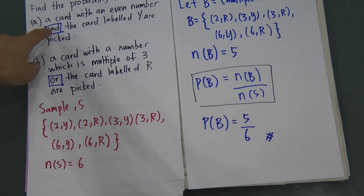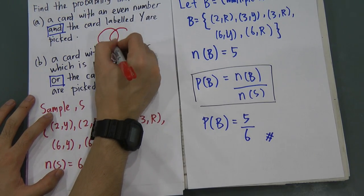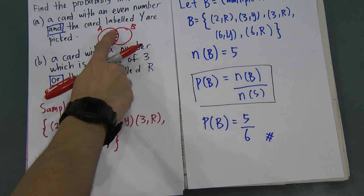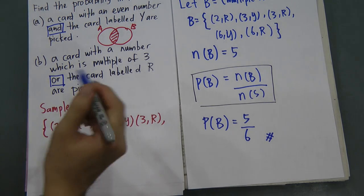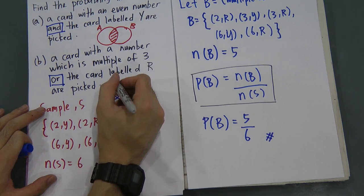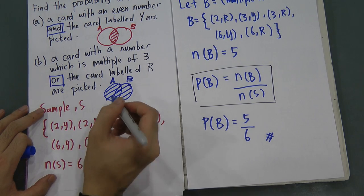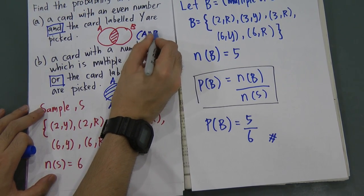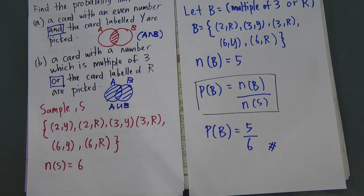In probability, you need to be very careful about the words 'and' and 'or'. 'And' is something like intersection — for two events A and B, 'and' means you must fulfill both conditions, only the middle part of the Venn diagram. 'Or' means union — for events A and B, 'or' means everything in A and B combined. So 'or' will mean A union B, and 'and' will mean A intersect B. This is something you need to know for probability. Thank you for watching.